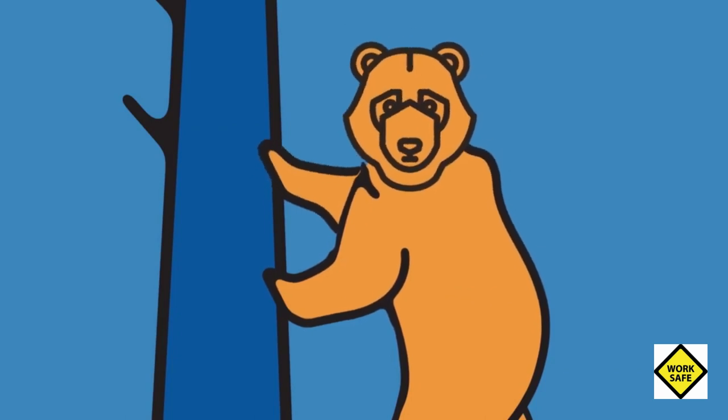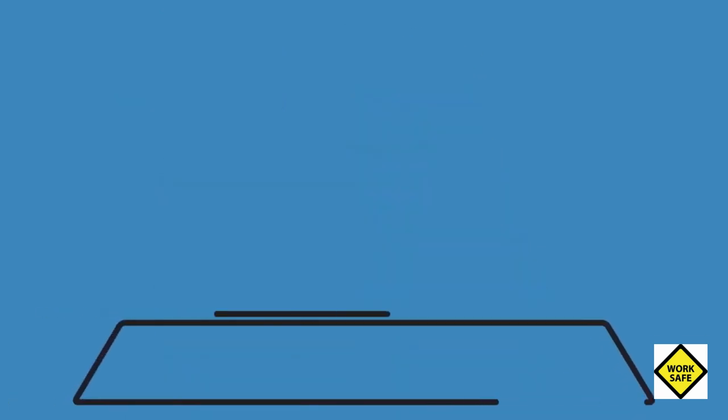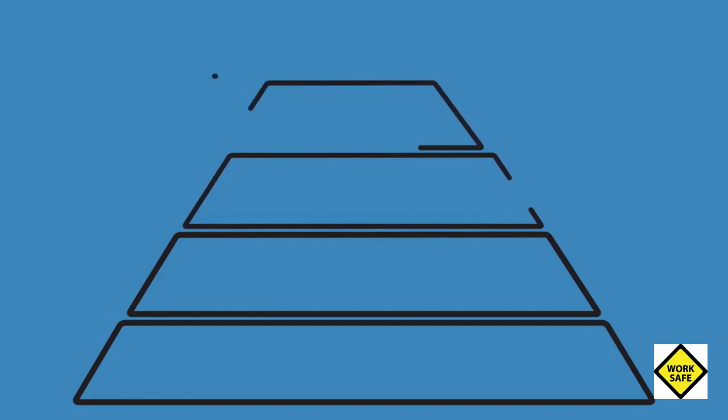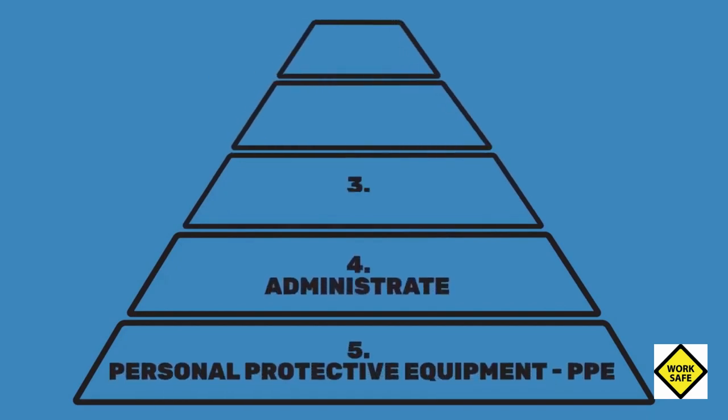Think of the Hierarchy of Controls concept as a pyramid with 5 levels of control and prevention that can help protect you and your co-workers from hazards on the job.